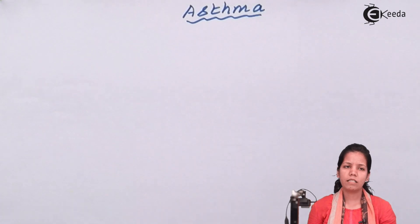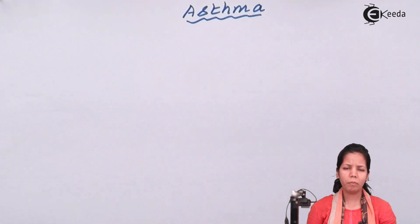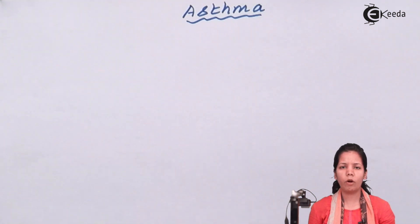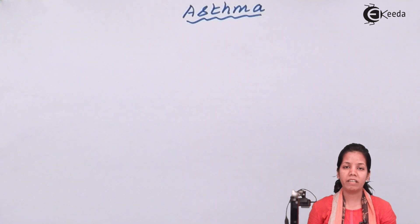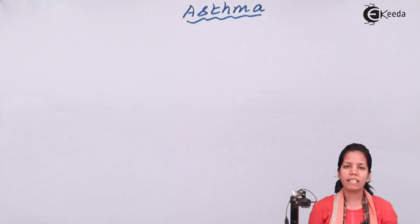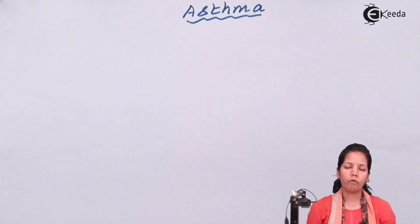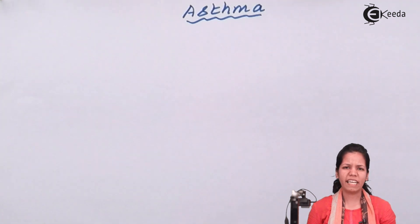Asthma is a condition that's very common in children. It can be related to periodic constrictions or periodic blockage in the bronchi or the bronchial region, which makes inhalation as well as exhalation difficult. When inhalation and exhalation are hindered, the gaseous exchange — that is, removal of CO2 and intake of oxygen — gets hampered.